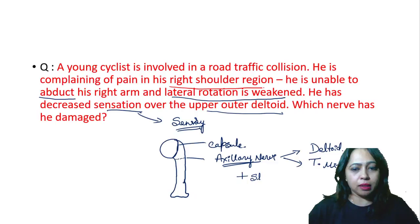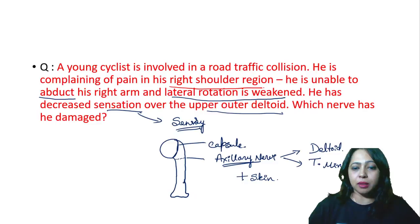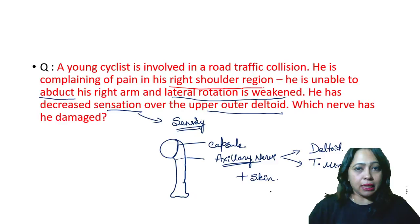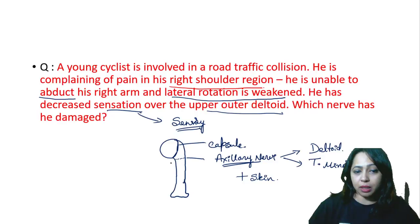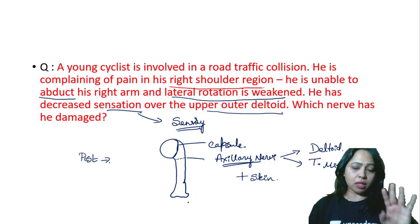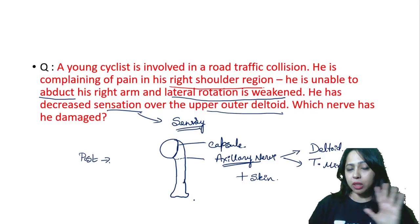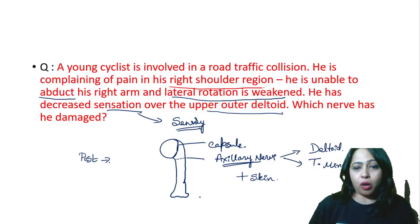The axillary nerve also supplies the skin in the regimental badge area — the area where military personnel wear their badge. That area is supplied by the axillary nerve. On the posterior aspect there is also the radial nerve, and at the medial epicondyle the ulnar nerve. So three important nerves are related to the humerus: axillary, radial, and ulnar. Obviously, in this scenario the axillary nerve has been damaged.